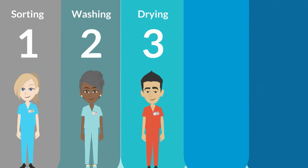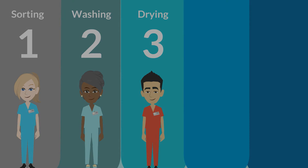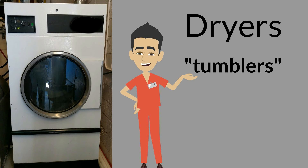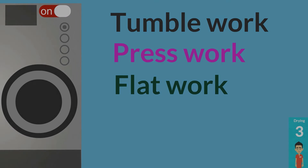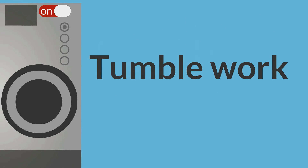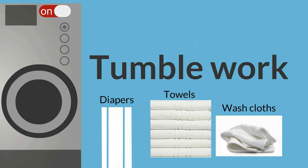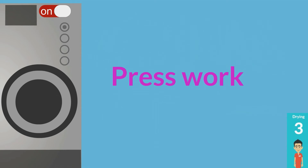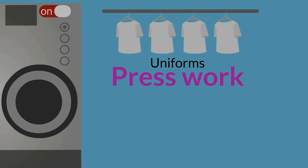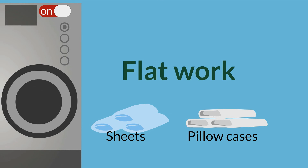The next step is drying. Dryers vary in size and can be heated by gas, steam, or electric. Large dryers are often referred to as tumblers. The drying process for linen may be done either during tumble work, press work, or flat work processing. Tumble work includes using the dryers for drying towels, washcloths, and diapers. Press work includes uniforms. Flat work refers to sheets, pillowcases, napkins, and other similar laundry pieces.